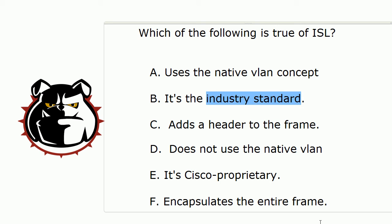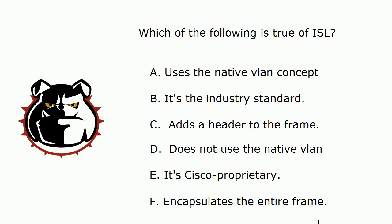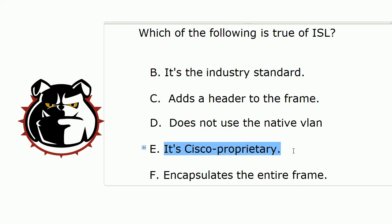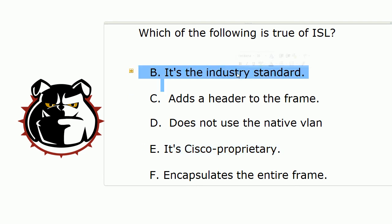ISL is a trunking protocol. Remember the other trunking protocol, 802.1Q? You've got to be clear on the similarities and differences between the two — there are a lot more differences than similarities. ISL does not use the native VLAN; that's one big drawback. So we're going to take that answer straight off the board. ISL is also Cisco proprietary, not industry standard, so we'll take that one off as well.